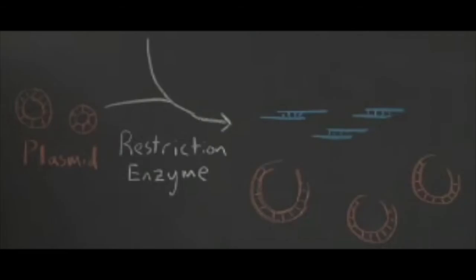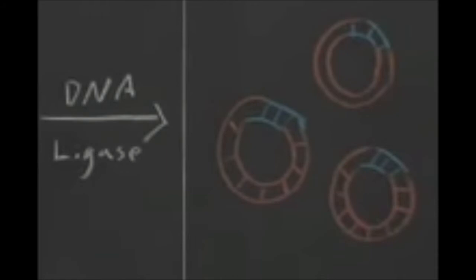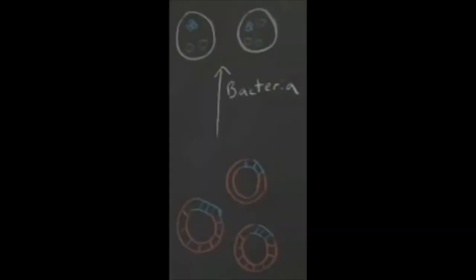Now that we have a gene of interest, we need to get it into bacteria. To do this, we need a vector. A plasmid is a simple vector. We can get cDNA into a plasmid using restriction enzymes to cut and DNA ligase to bind the pieces together. The next step is to get the plasmid into bacteria so it can be expressed. One common way of doing this is through electroporation — the bacteria is subjected to an electric shock that creates holes in the membrane that allow DNA to enter.